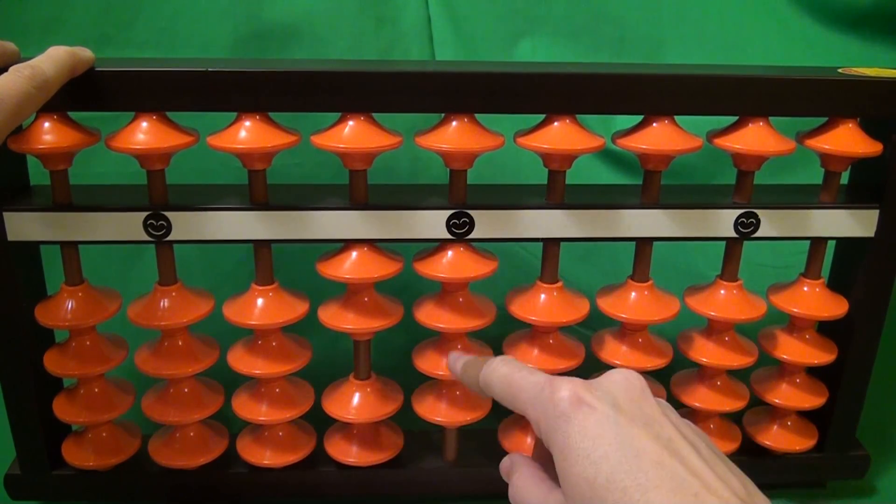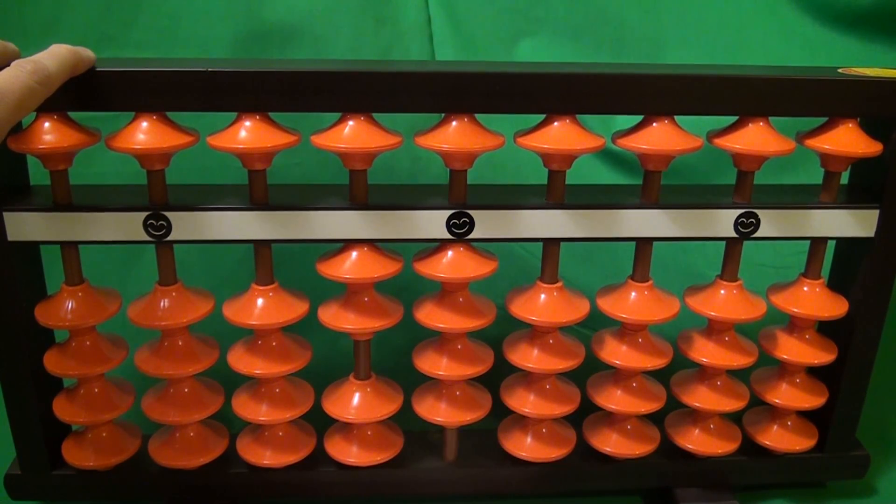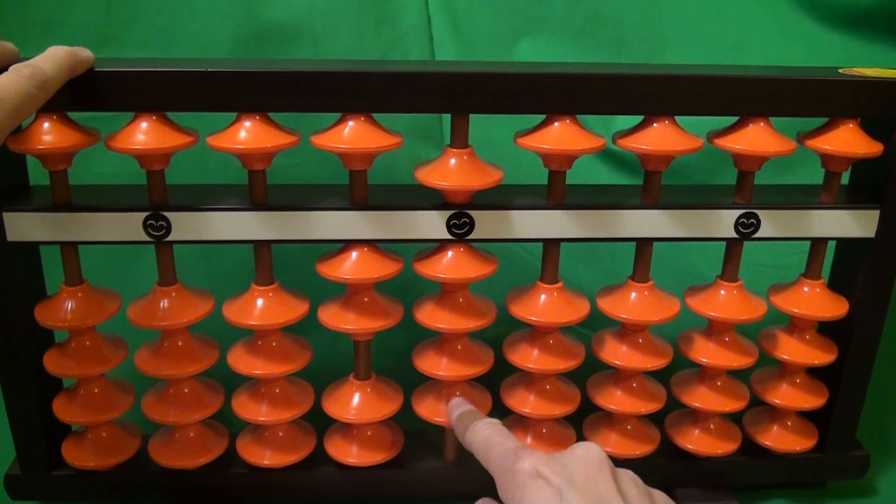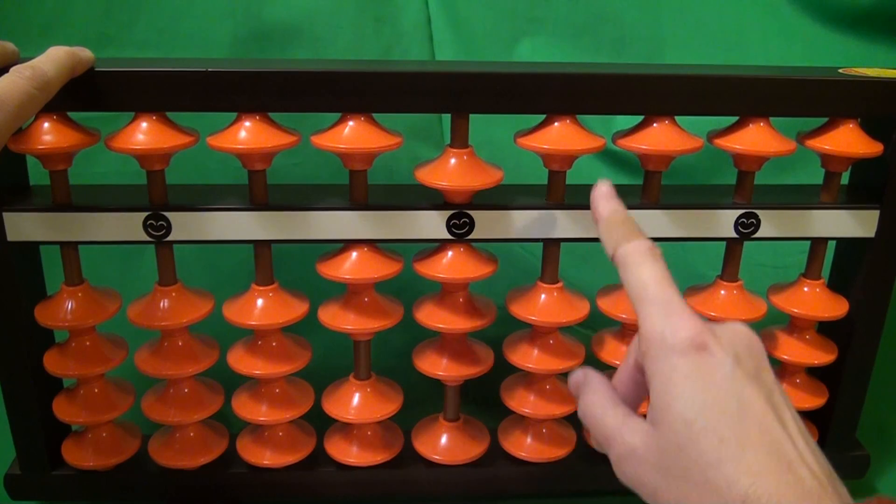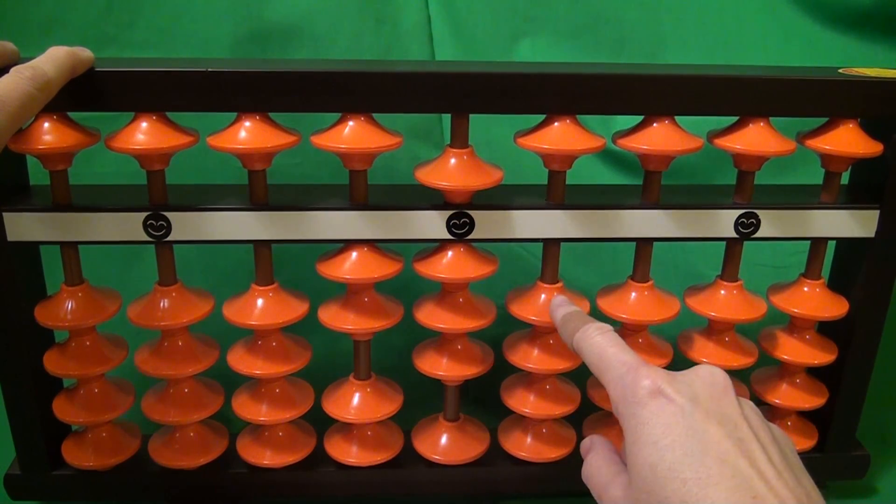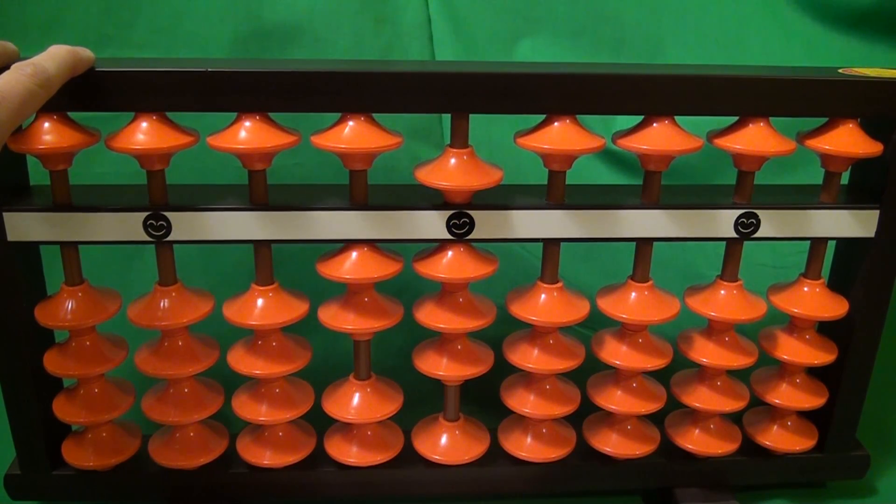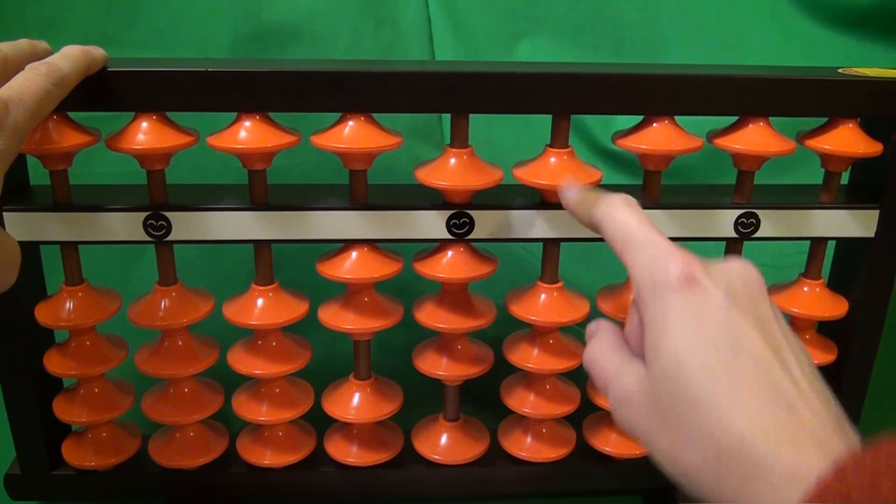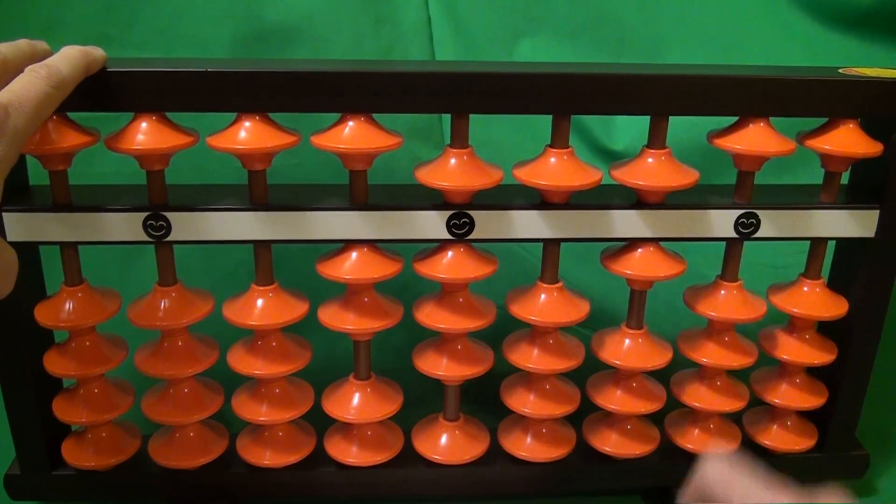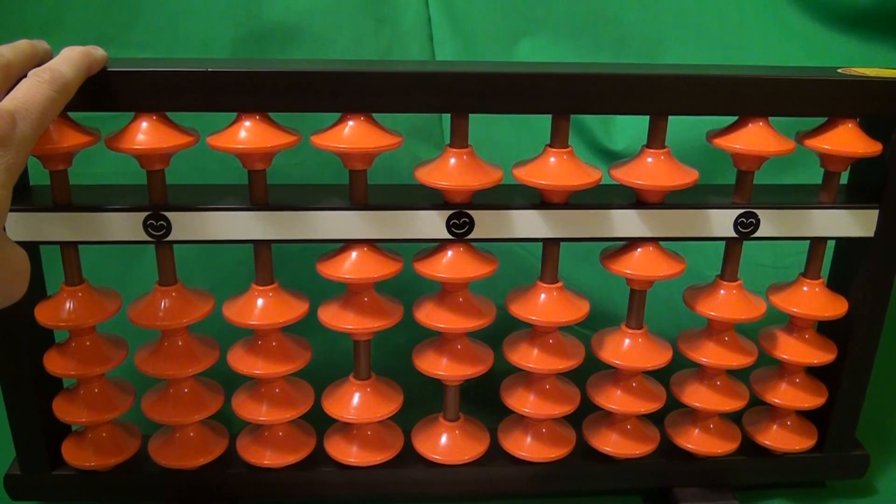And now here we do 5 times 8. 5 times 8 is 40. So add 4 and 0. Do nothing here. And then the last one is 8 times 7. 8 times 7 is 56. So add a 5 and add a 6. So we've taken care of the 8's.